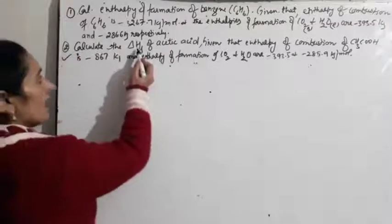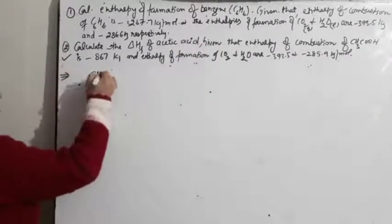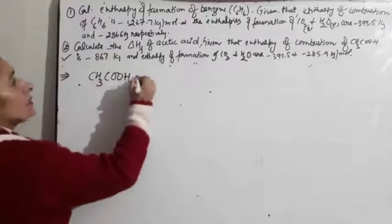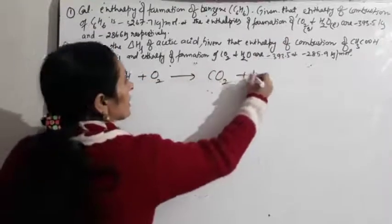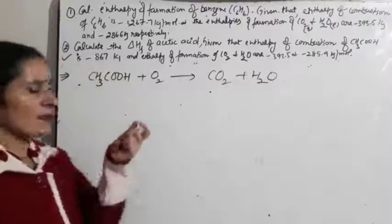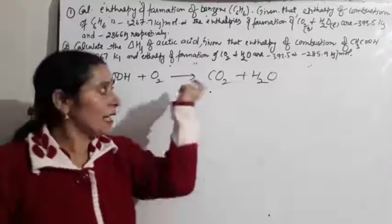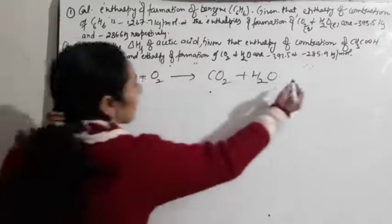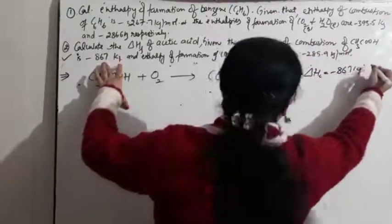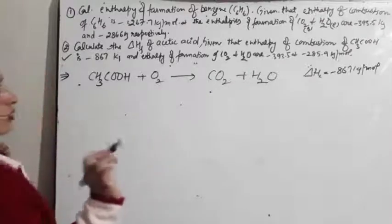Numerical 2: Calculate the enthalpy of formation of acetic acid (CH3COOH). Given: enthalpy of combustion of acetic acid = −867 kJ/mol. Combustion: CH3COOH + O2 → CO2 + H2O. Any organic compound's combustion gives CO2 and water. Balance: 2 carbons → 2CO2; 4 hydrogens → 2H2O; oxygens balance with coefficient 2 for O2.